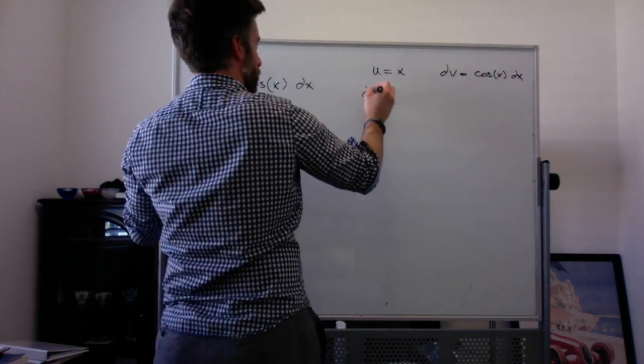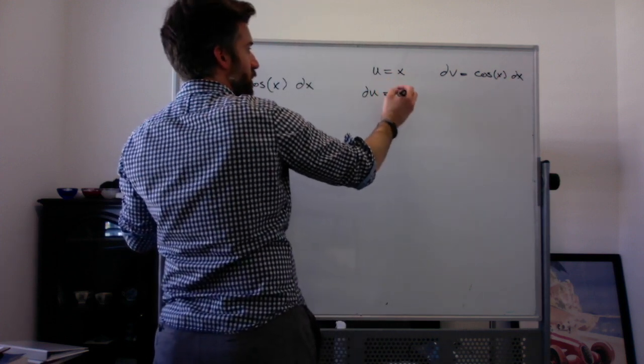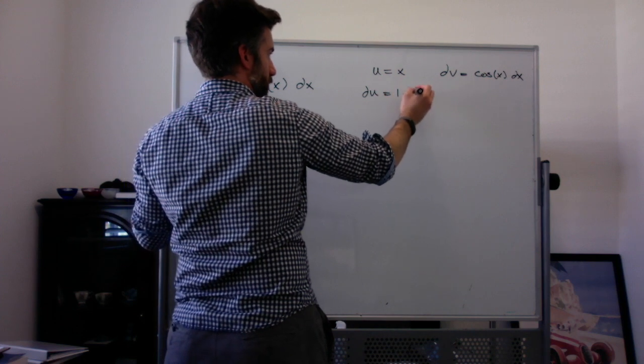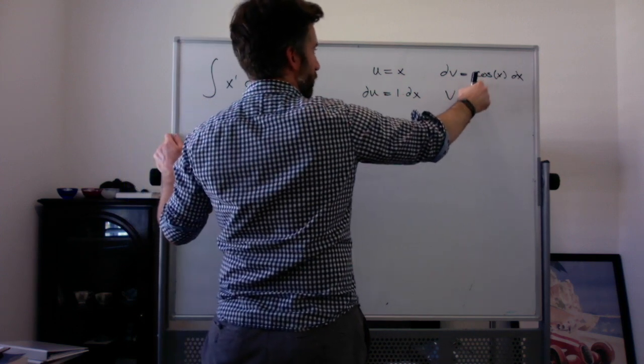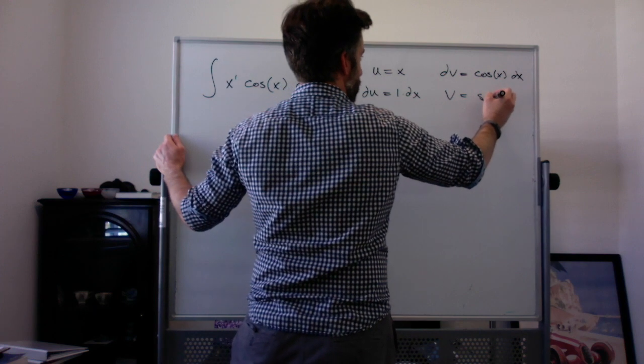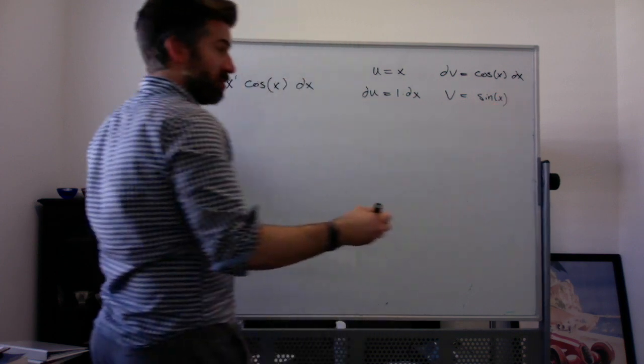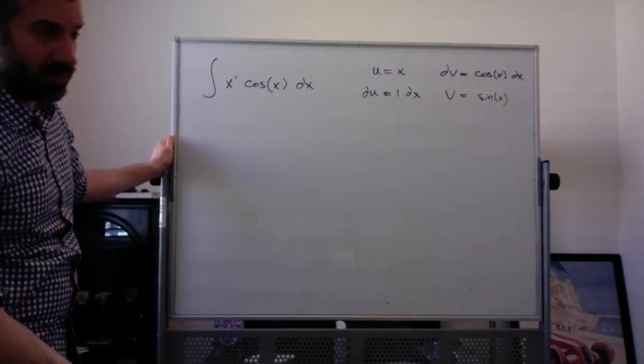The du, well the derivative of x is just 1, so du is 1 times dx. V, the anti-derivative of cosine of x is positive sine of x. Just like the derivative of cosine of x is negative sine of x.